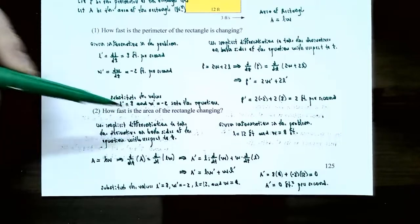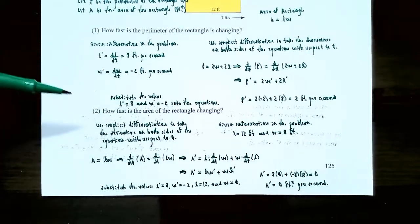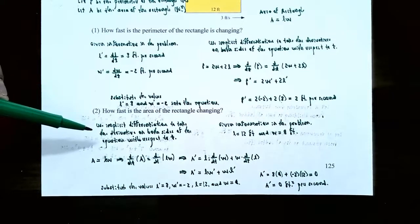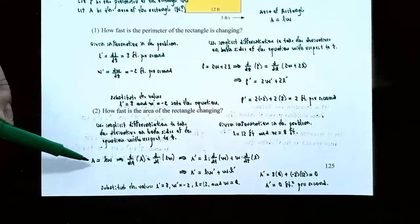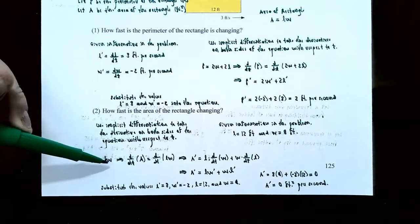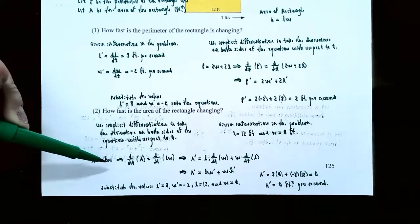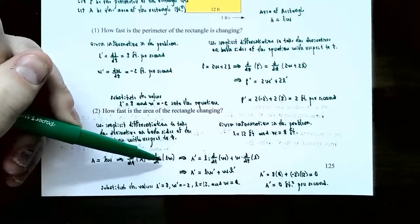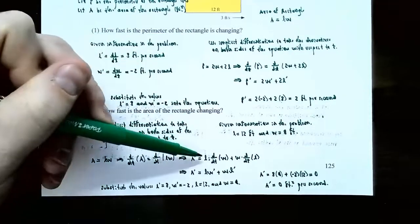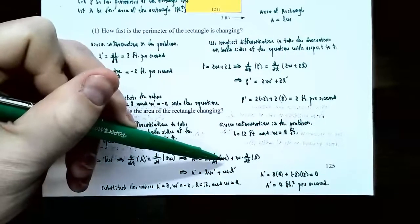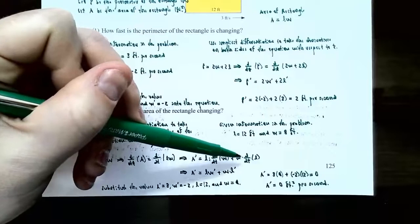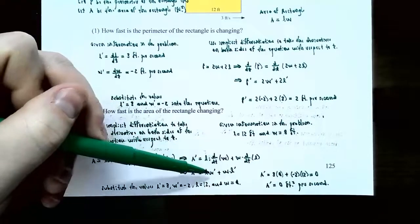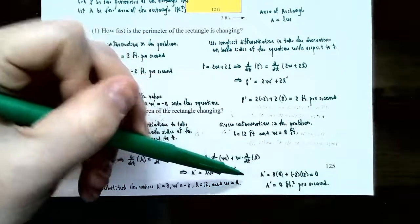For the area we use the formula A equals L times W, then apply implicit differentiation with respect to time. Since L and W are both functions of time, we must use the product rule. The derivative of A is A prime. For the right side, using the product rule: A prime equals L times W prime plus W times L prime.